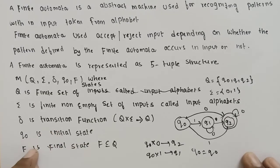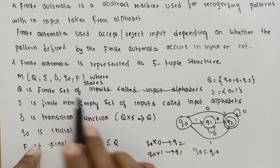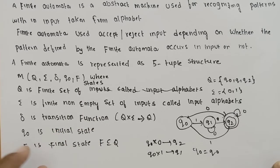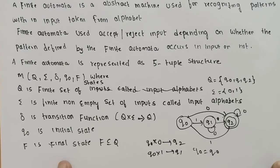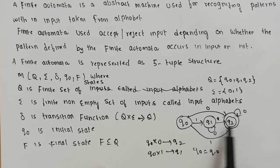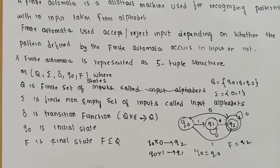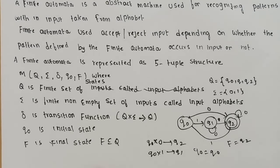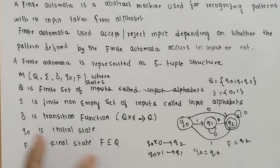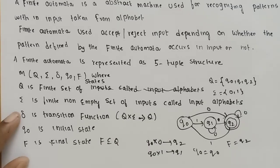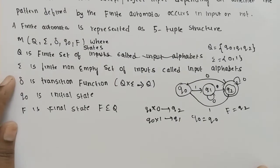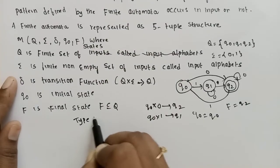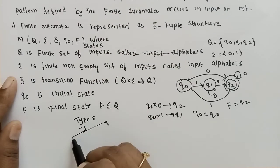Next, F. F is the final state, also called the last state or end state. In this example, the final state is Q2.